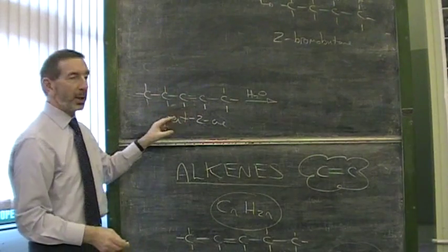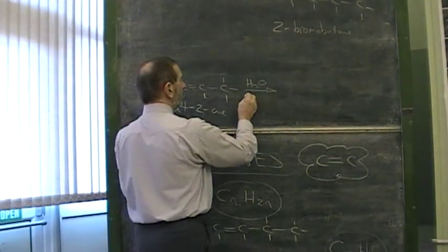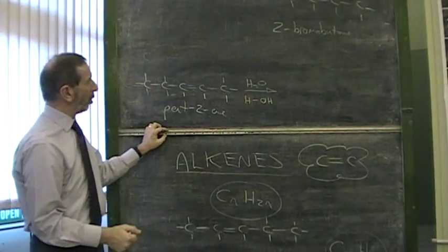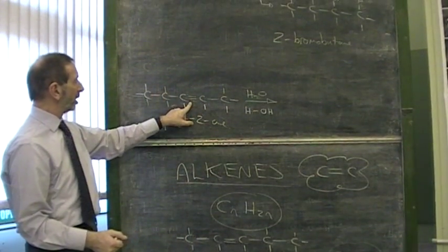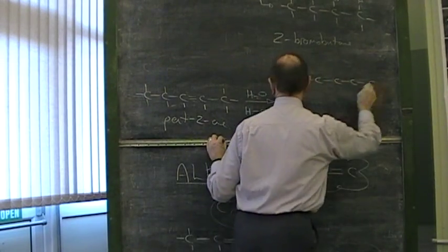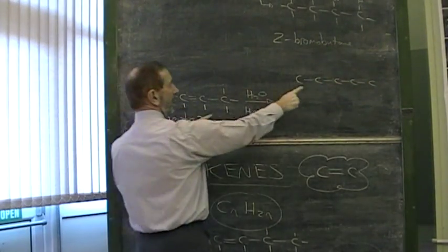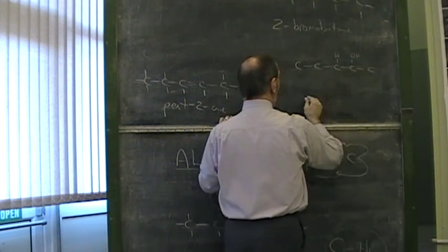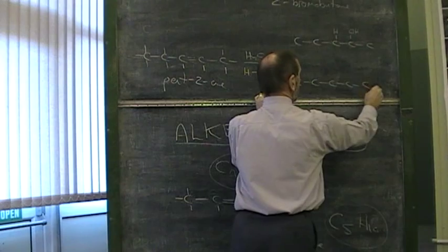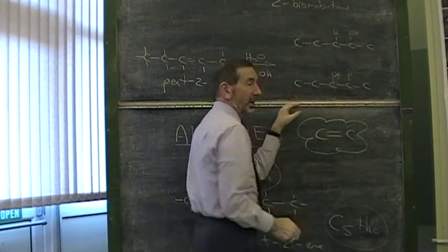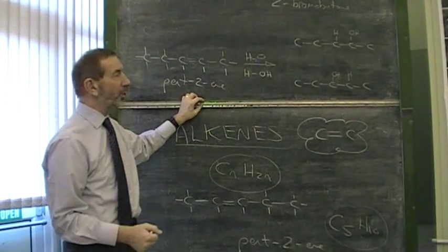It's the same problem as before. The water can add on in one of two ways. The H in the water could add on to one atom and the OH to the other. So there are two outcomes. Either the water adds on across the double bond like this, HOH, or it adds on the other way round. Maybe it's HOH. Does it matter? Yes, it does. There are two different products.